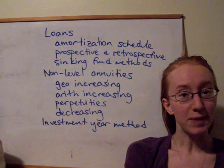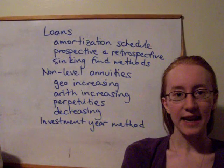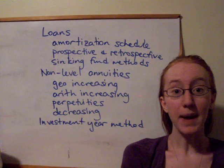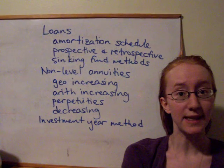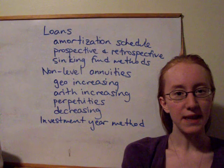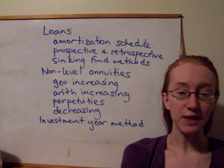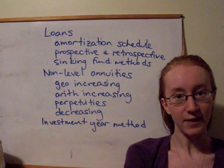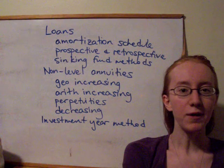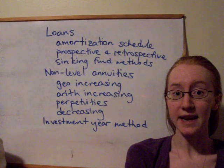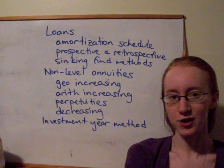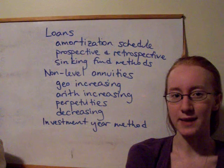The retrospective method looks backwards and takes the accumulated value of the loan minus the accumulated value of any payments that have been made. The prospective method looks forwards and calculates the present value, at the time that you're looking, of all the future payments that are remaining to be made on the loan. Those two methods should always give you the same answer.